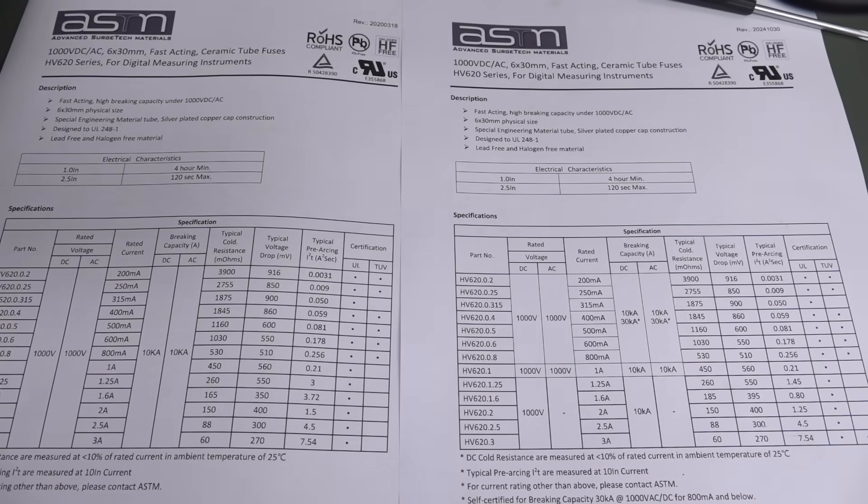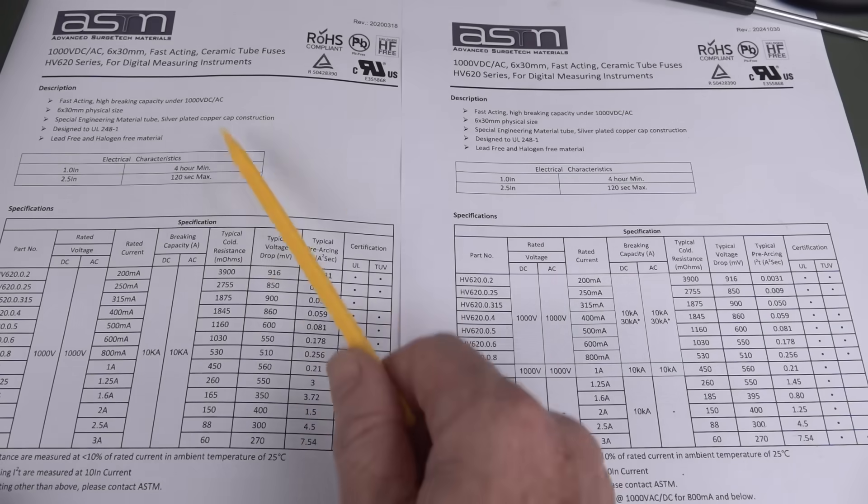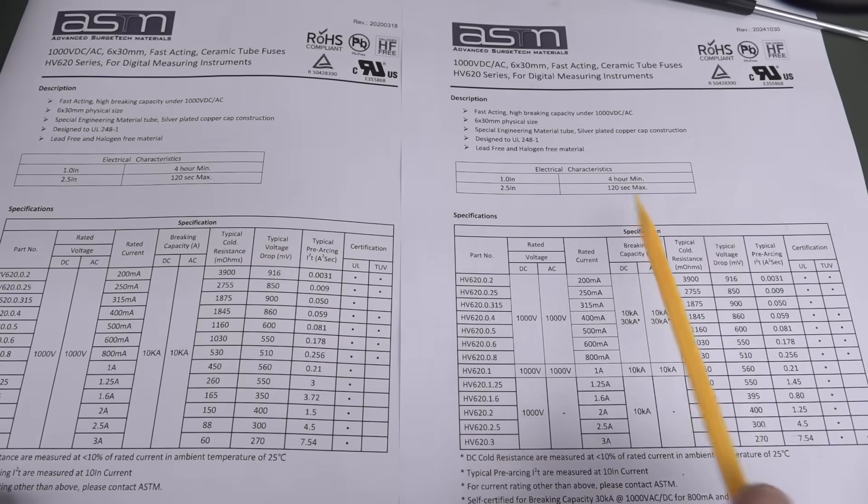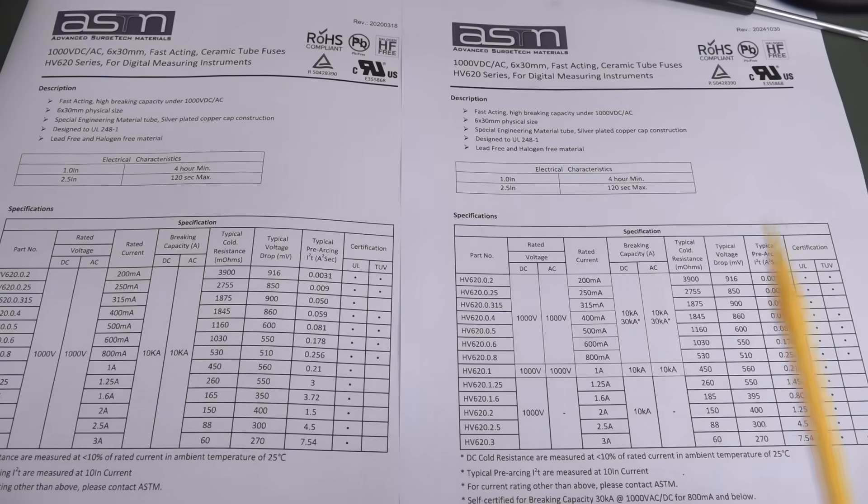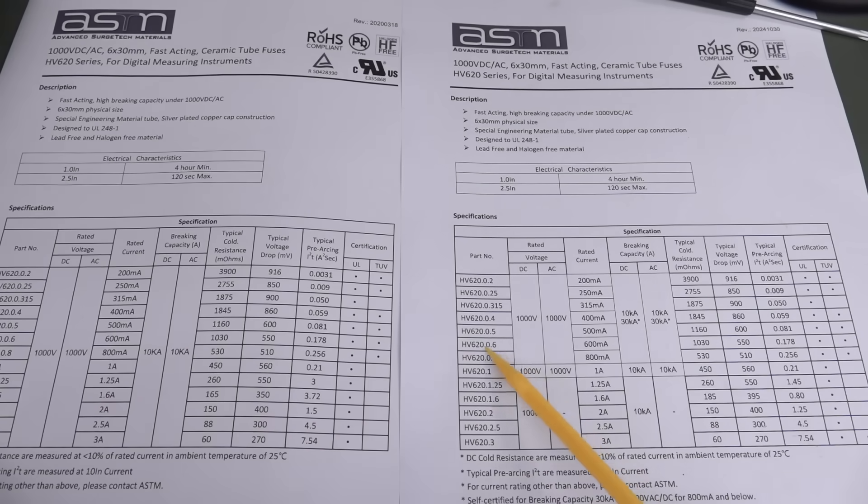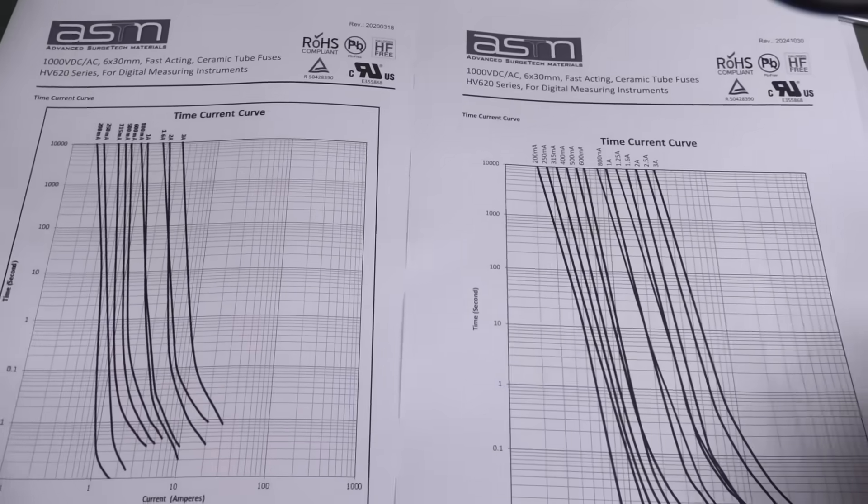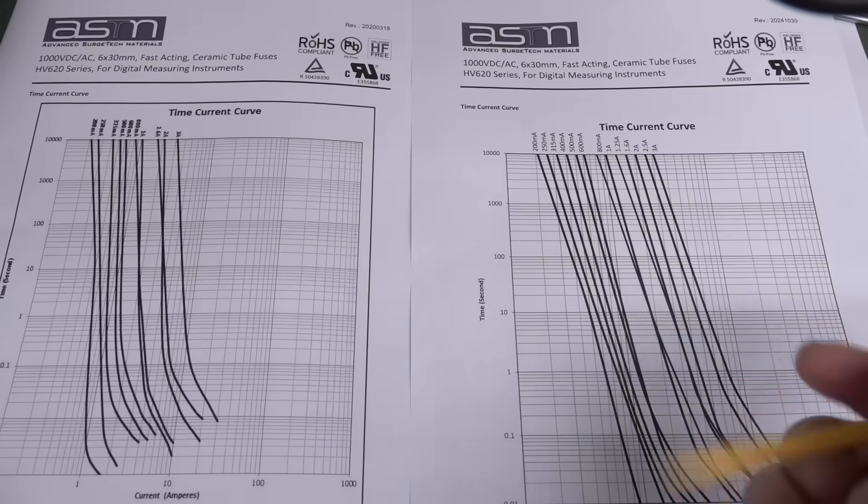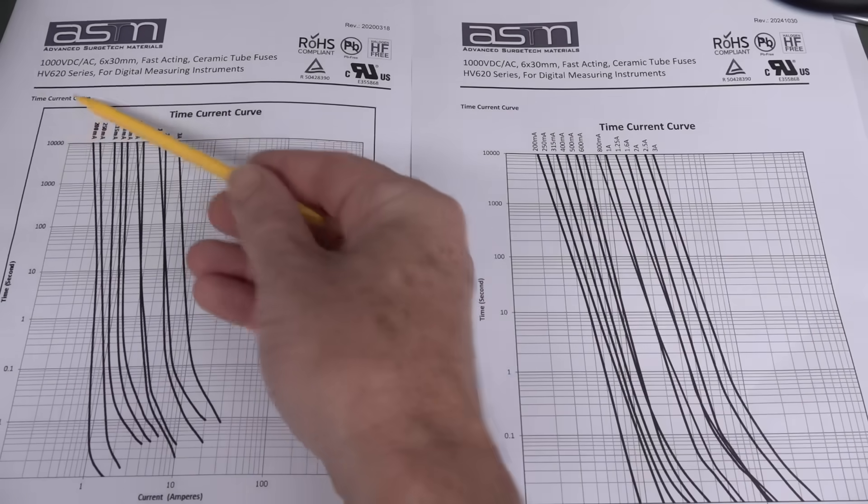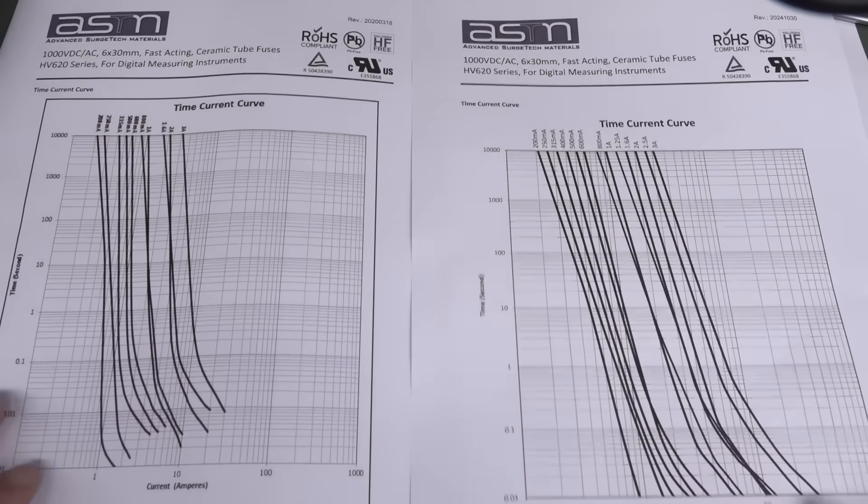Anyway, I did some testing and I was getting rather confusing results that didn't quite match the data sheet. And then I realized that I had an old data sheet. So I asked them for a new data sheet and there's actually significant differences in the data sheet. They don't actually have the 630 milliamp one here. So I specifically asked them for the 630 milliamp data sheet and I got that. But what they sent me is the latest data sheet, which is exactly the same fuse. Nothing's changed. It's the HV620 series.